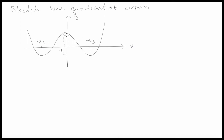So the first thing you need to do is figure out what are the values, in terms of whether they're positive or negative, of the gradient of this curve. The first part is to determine where are your zero gradients. Zero gradients always happen at the maximums or minimums — the top parts or the troughs. So here we have zero, here we have zero, and here we have zero.